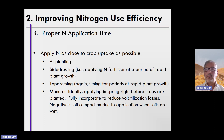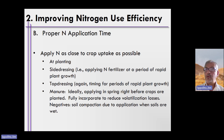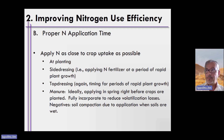Oftentimes producers will apply some nitrogen at planting. You might not want to apply it all at planting, but if you have no other choice, apply it all at planting. You can apply some at planting to help stimulate growth early in the plant's life cycle. You could also side dress nitrogen during the growing season — applying a nitrogen fertilizer when the corn or crop is growing rapidly and needs nitrogen, especially during rapid growth phases.